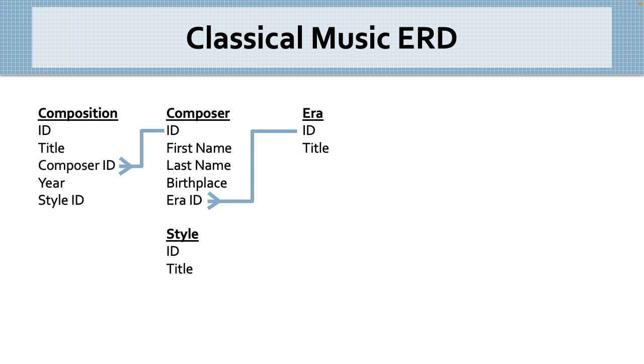Last one, between composition and style. For any one composition, how many styles could it be? One or many? Only one. So, we leave a straight line on the style side. Then, for any one style, how many compositions could be of that style? One or many? Many! We add a crow's feet on the composition side, and our entity relationship diagram is complete.